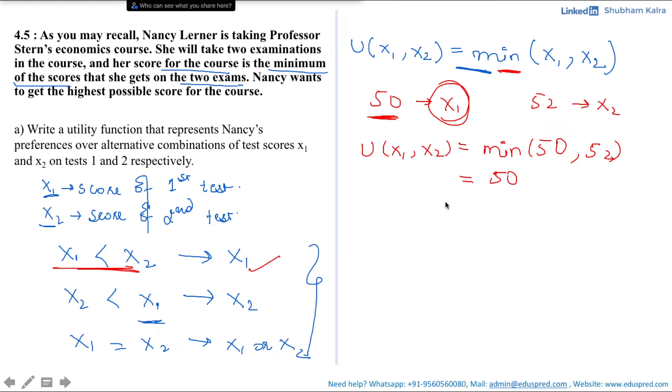Now let's take another example where X2 is less than X1. That would be, suppose your X1 is 70 and X2 is 50. Thus, here your X2 is less than X1 and the minimum of the two would be X2. Thus the score of 50 would be considered.